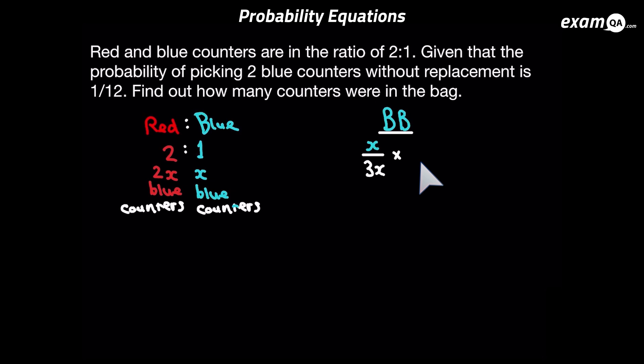We're going to pick another counter — a blue counter — and there's one less blue counter now. So those x amount before, now there's going to be x minus 1 amount of blue counters. And the total was 3x; of course if there's one blue out of the bag it's going to be 3x minus 1. So our second pick is x minus 1 over 3x minus 1. This fraction you can only get using this method. And we know the answer from the question: it's 1 over 12. So we've got our probability equation.